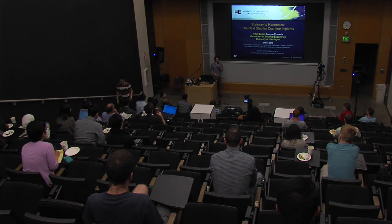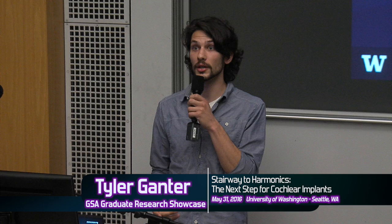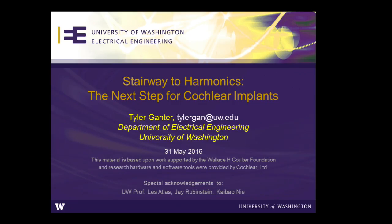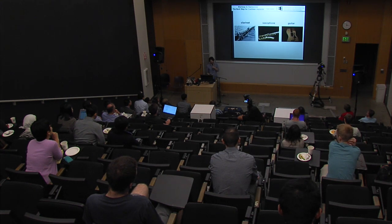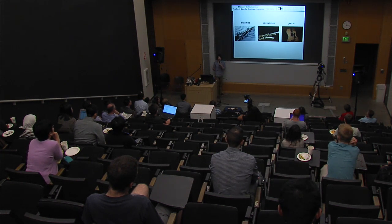Hey everyone. My name is Tyler, and I'm working in the ISDL lab under Les Atlas. Today I'm going to talk about encoding harmonic sounds in cochlear implants. I'll start with a game — I'll introduce three things and ask what the outlier is. We've got Jimi Hendrix, Beethoven, and Stevie Ray Vaughan — and the answer was Beethoven. Next: clarinet, saxophone, and guitar — guitar. And finally, what you're looking at are the electrical stimulation patterns you might experience with a cochlear implant listening to each of those instruments. We want the stimulation to look like the right figures, but we get weird artifacts with the clarinet.